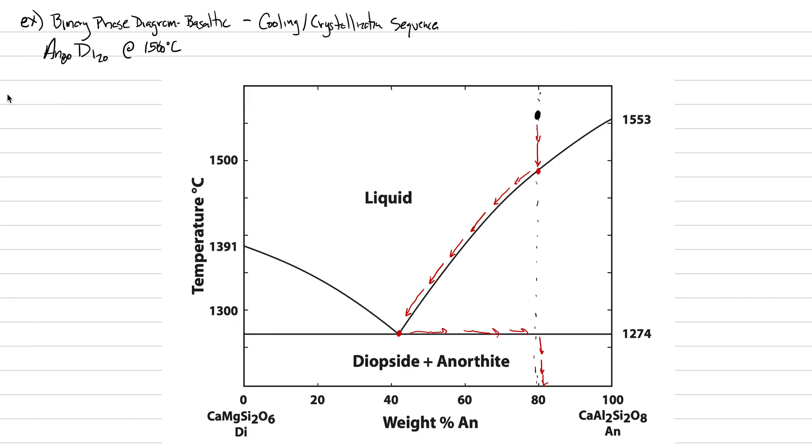We're going to march through at different temperatures. For T1 at 1550 degrees C, we want to know the percent solid, the percent liquid, the composition of that solid, and the composition of that liquid. We're above liquidus, so it is 0% solid, 100% liquid. The composition of the liquid is AN80DI20, same as what we started with.